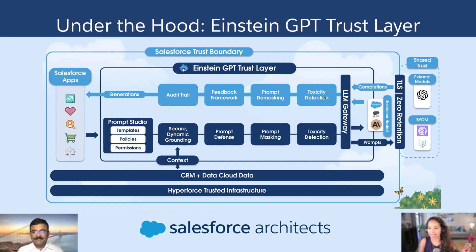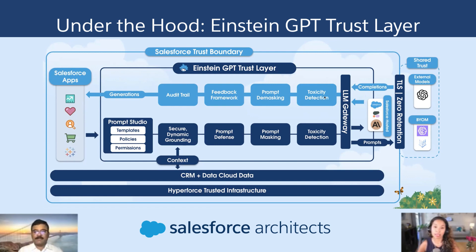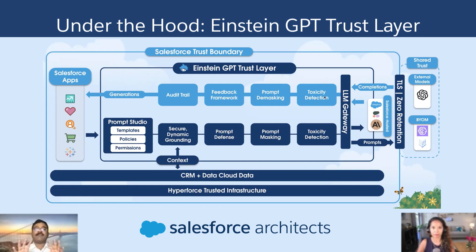Will the customer be able to see that something might be toxic or might be a hallucination? Or is that being screened out so the user isn't even seeing it? It's the latter. It all happens in the background, under the hood, and is very transparent for the users. Users will see the final crafted, relevant, contextual generated response.